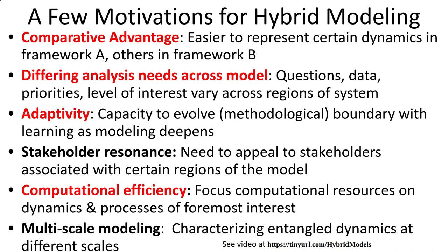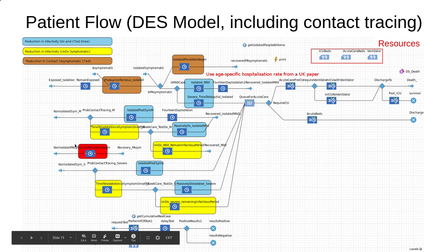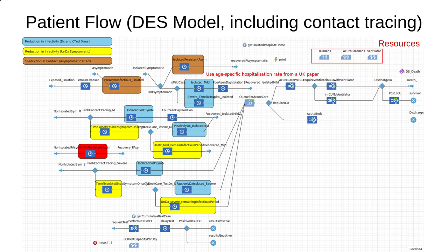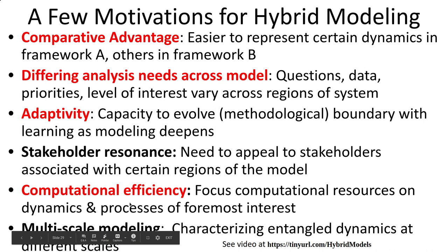Adaptivity is a key motivator for hybrid modeling—the ability to shift the boundaries of this model in a nimble way to capture more detail. For example, we might wish to individuate not just infectious individuals, but those who are named as contacts of an infective. We can shift the boundaries as our sense of priorities evolve. Computational efficiency is another motivator. By representing most of the population as susceptible in a compartmental way at any given time, the model can run very quickly for scenario exploration, while representing with requisite detail our focal interest in infectious individuals and their acute care journey. We get the best of both worlds: great computational efficiency and rich understanding of the key aspects of the system.